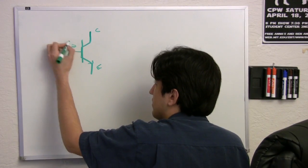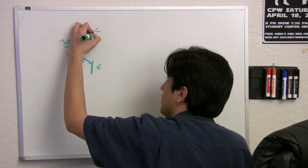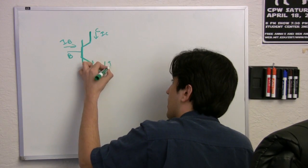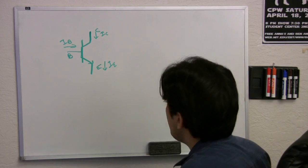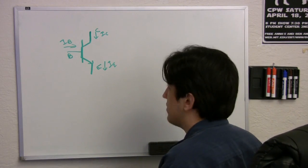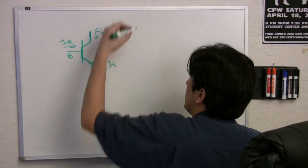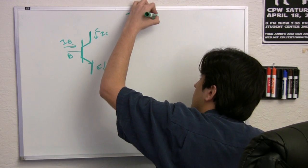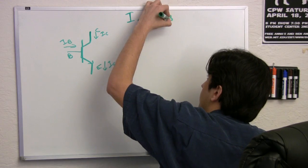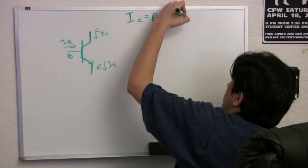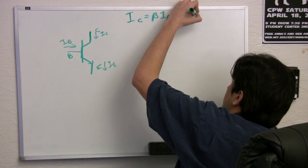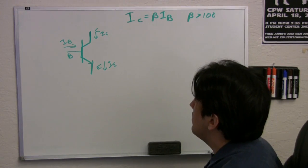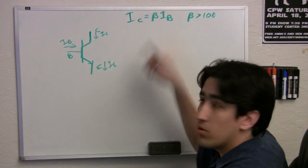And we also define three currents. The current going into the base, the current going into the collector, and the current coming out of the emitter. And there's also some equations that govern how these currents and voltages interact with each other. The most important ones are the following. The collector current is always going to be the base current times beta. And for these bipolar junction transistors, beta is greater than 100.